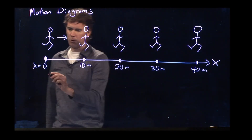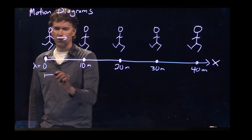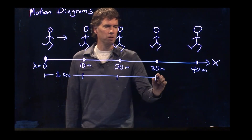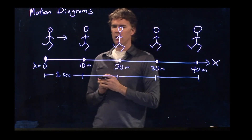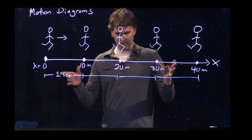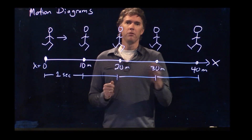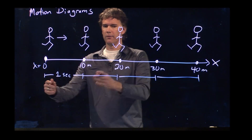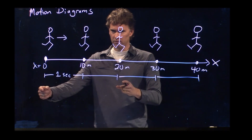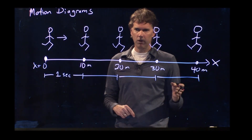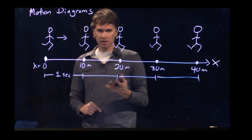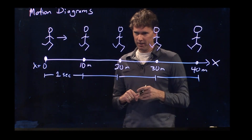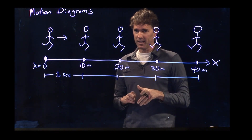Each interval corresponds to one second, so there's one second in between each flash of our camera. Based on these numbers, you would probably say the person is running at constant speed. They are going 10 meters in the first second, 20 meters in two seconds, 30 meters in three, and 40 meters in four — which is running at 10 meters per second. At my advanced age I cannot do that, but 10 meters per second, that's moving.